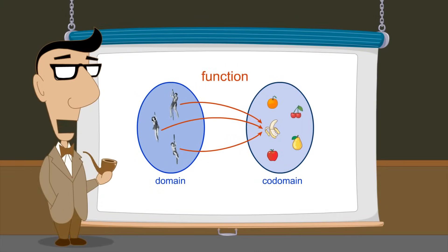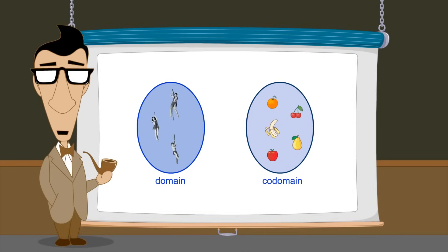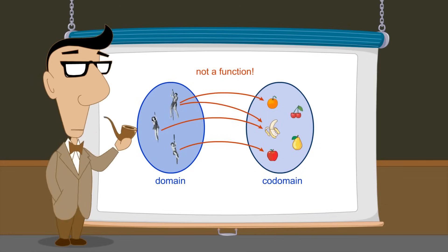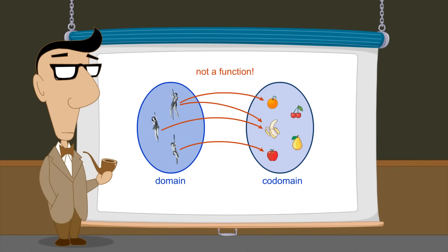In all three cases, each person is related to exactly one fruit, so these binary relations are all functions. On the other hand, if someone had two favorite fruits, then that relation would not be a function. To be a function, a binary relation must relate each element of its domain to exactly one element of its co-domain.